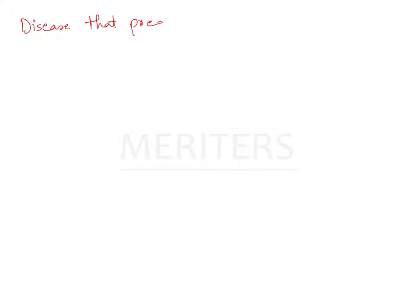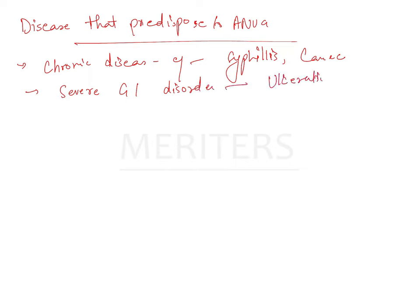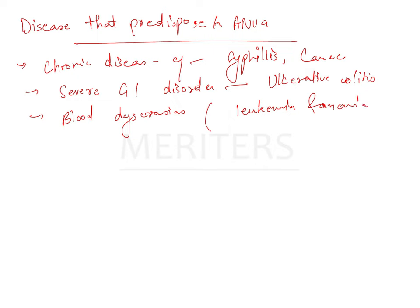Diseases that predispose to ANUG: ANUG is Acute Necrotizing Ulcerative Gingivitis. The predisposing diseases are chronic diseases such as syphilis, cancer, severe GI disorders like ulcerative colitis, and blood dyscrasias like leukemia and anemia.